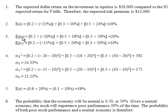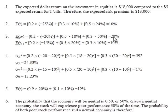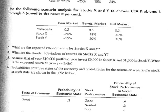For stock X, you take the weighted average with three terms and get 20%. For stock Y, you take the weighted average again and get 10%. So the expected return for stock X is 20%, and the expected return for stock Y is 10%.